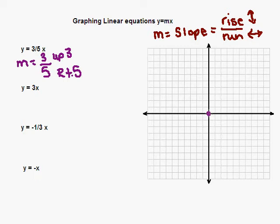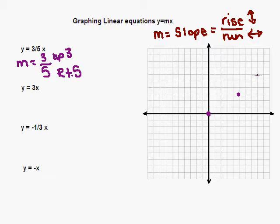From the starting point of (0, 0) we're going to apply our slope. From that point I'm going to go up three, then to the right five — that's where my second point goes. Then we want to do it again; you want at least three points before you draw your line. So I go up three, to the right five again, and there's my third point on this line.